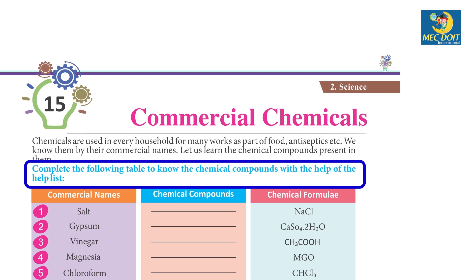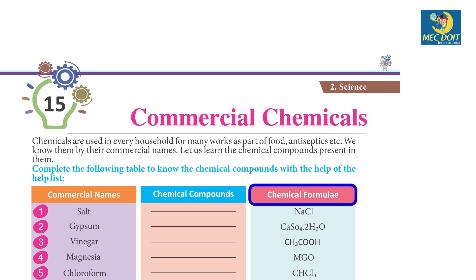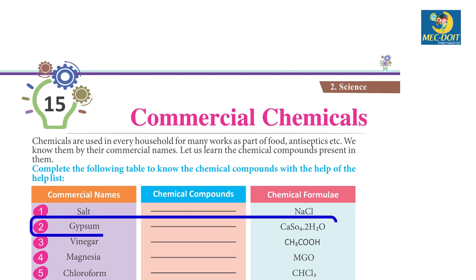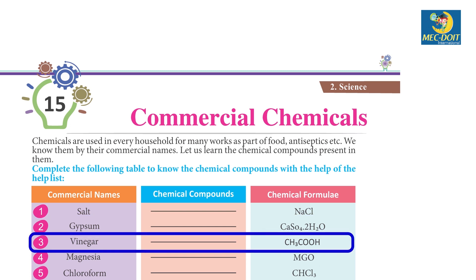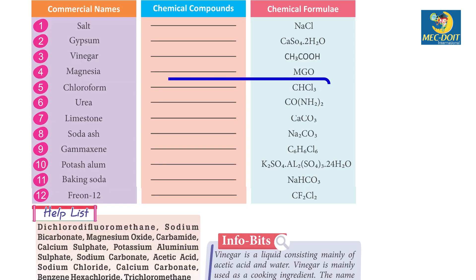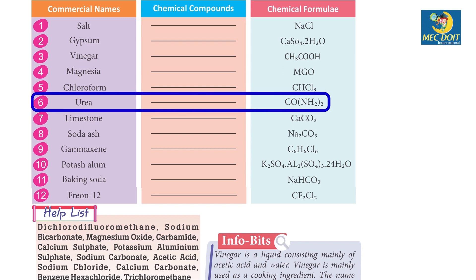Complete the following table to know the chemical compounds with the help list. Commercial names, chemical compounds, chemical formulae: 1. Salt - Sodium Chloride. 2. Gypsum - Calcium Sulphate. 3. Vinegar - Acetic Acid. 4. Magnesia - Magnesium Oxide. 5. Chloroform - Trichloromethane. 6. Urea - Carbamide.